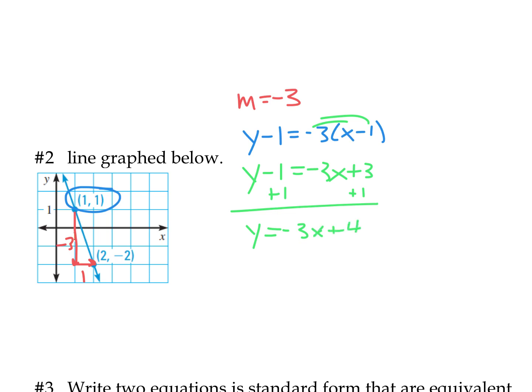To get standard form, I add 3x to both sides so it cancels from the right. That gives 3x plus y equals 4, and there's my standard form. So remember: find the slope, write point-slope form, simplify to slope-intercept form, and then get x on the same side as y — and you've got standard form.